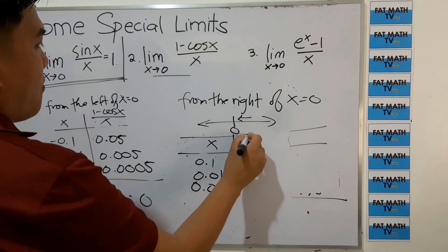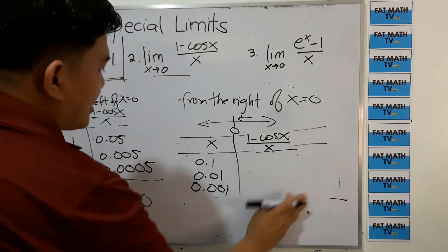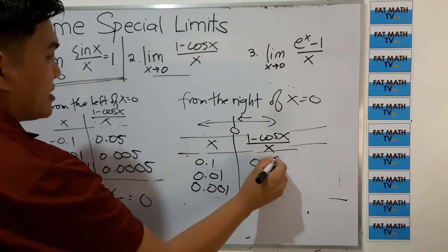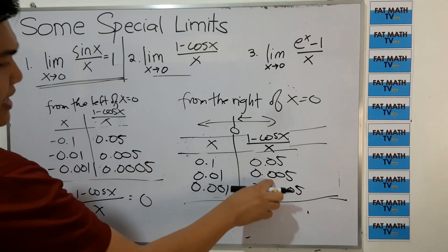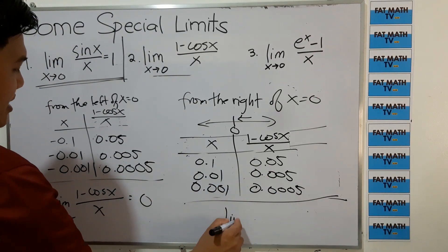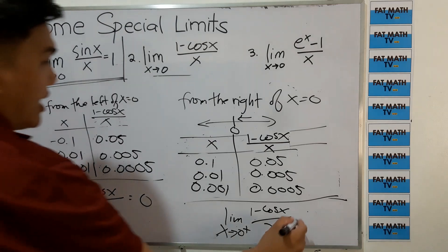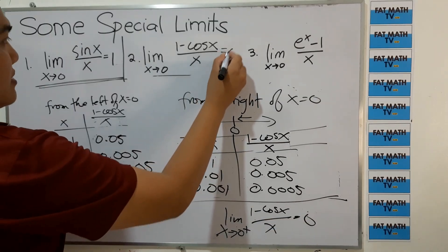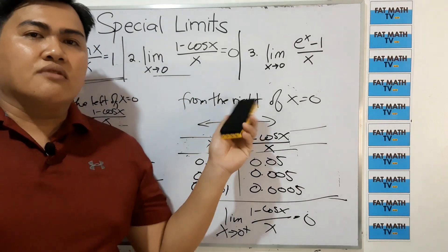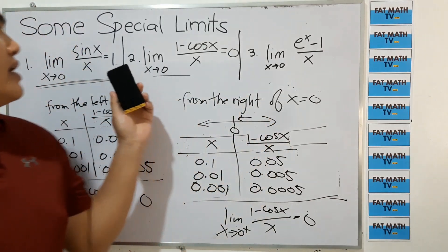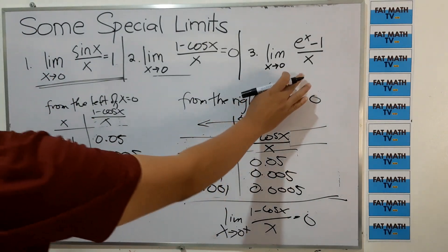For values from the right of 0, computing 1 minus cosine x over x gives 0.05, 0.005, and 0.0005 as well — the values also go to 0. So the limit of 1 minus cosine x over x as x approaches 0 from the right is also 0. You need to memorize these special limits because they will be used later to derive the formulas for the derivatives of the trigonometric and exponential functions.